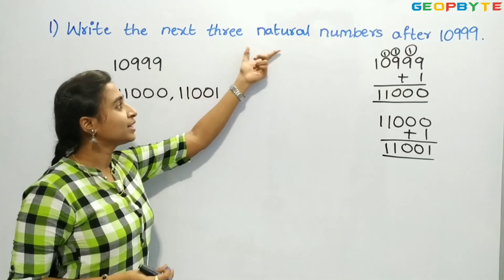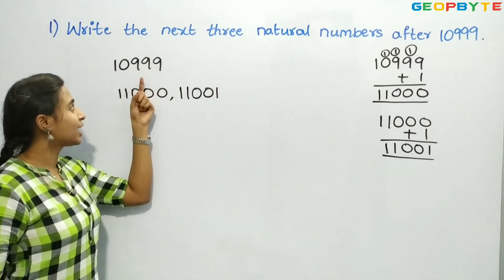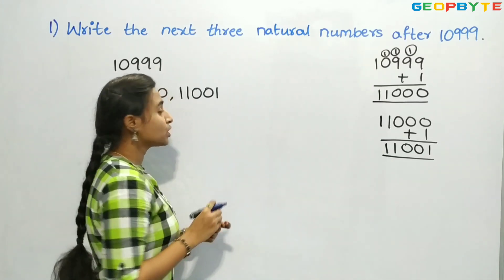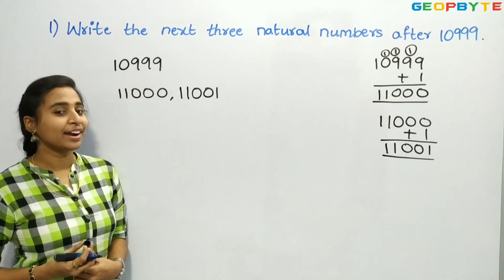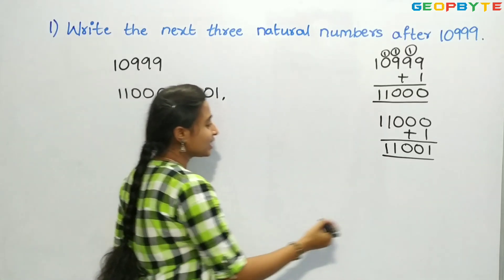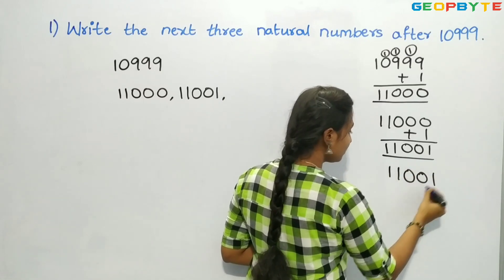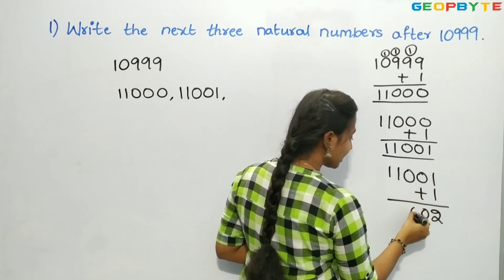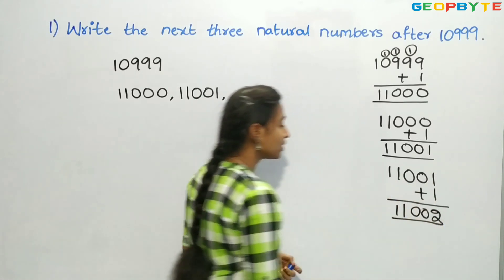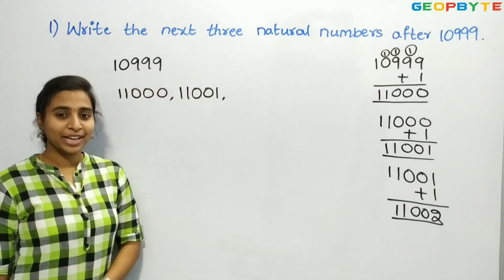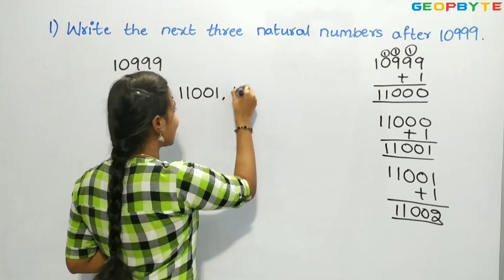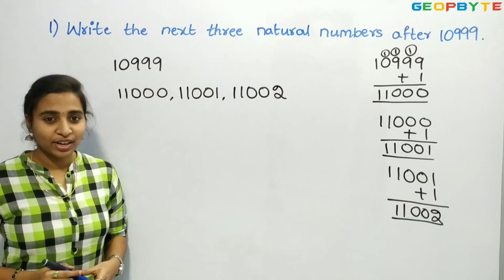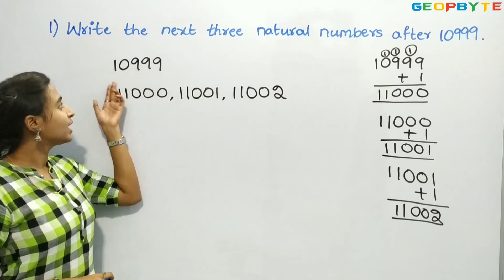They asked us to write 3 natural numbers after 10,999, and we have written only 2. Let us write the third one. For the third natural number, we add 1 to 11,001: 1 plus 1 is 2, and we have two 0s and two 1s. So the next number after 11,001 is 11,002. These are the 3 natural numbers obtained after 10,999.